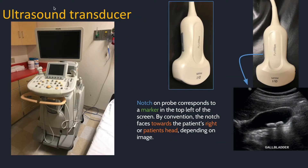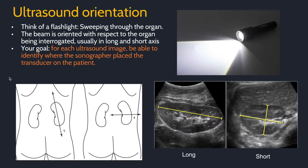One of the most difficult parts of learning ultrasound is just getting oriented to each image. Here is an ultrasound machine and a transducer. The notch in blue here corresponds to the marker on the top left of the screen. By convention, the notch is facing towards the patient's right or the patient's head, depending on the image. You can think of ultrasound like a flashlight — it sweeps through the organ with a beam oriented in relation to the organ rather than to the body, like CT and MRI. So for ultrasound, we say short axis and long axis of the organ.